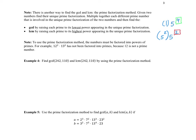So the GCD is found by raising each prime to the lowest power appearing, and the LCM is found by raising each prime to the highest power appearing. For this method to work, we need prime factorizations — so if you have 12 and 13, the 12 still needs to be broken into prime numbers.